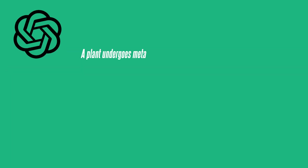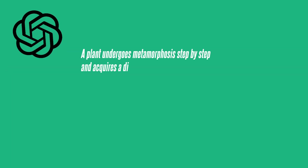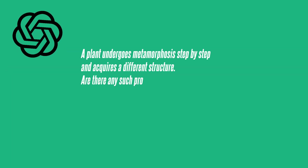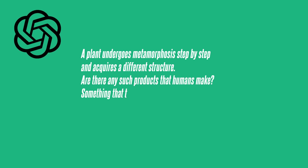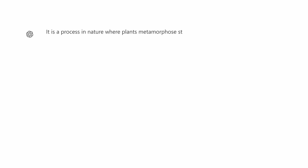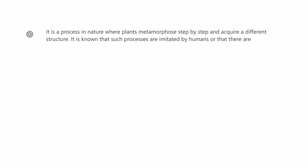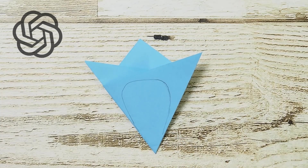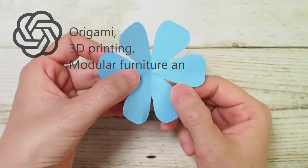A plant undergoes metamorphosis step by step and acquires a different structure. Are there any such products that humans make — something that transforms step by step and gains a different structure? The answer involves processes imitated by humans: origami, 3D printing, modular furniture, and Lego.